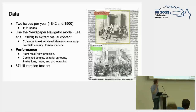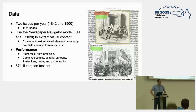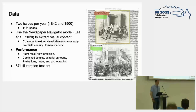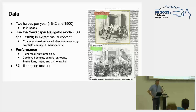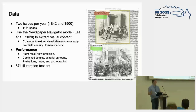I will first go into the first step of our project, namely collecting the images from the digitized or scanned pages of the Illustrated London News. For this initial step, we sampled two issues of the Illustrated London News for every year between 1842 and 1900, resulting in a test set of around 1,200 scanned pages. We then used the Newspaper Navigator model, which Ben developed at the National Library of Congress to extract visual content from early 20th century American newspapers, to extract illustrations from the Illustrated London News.